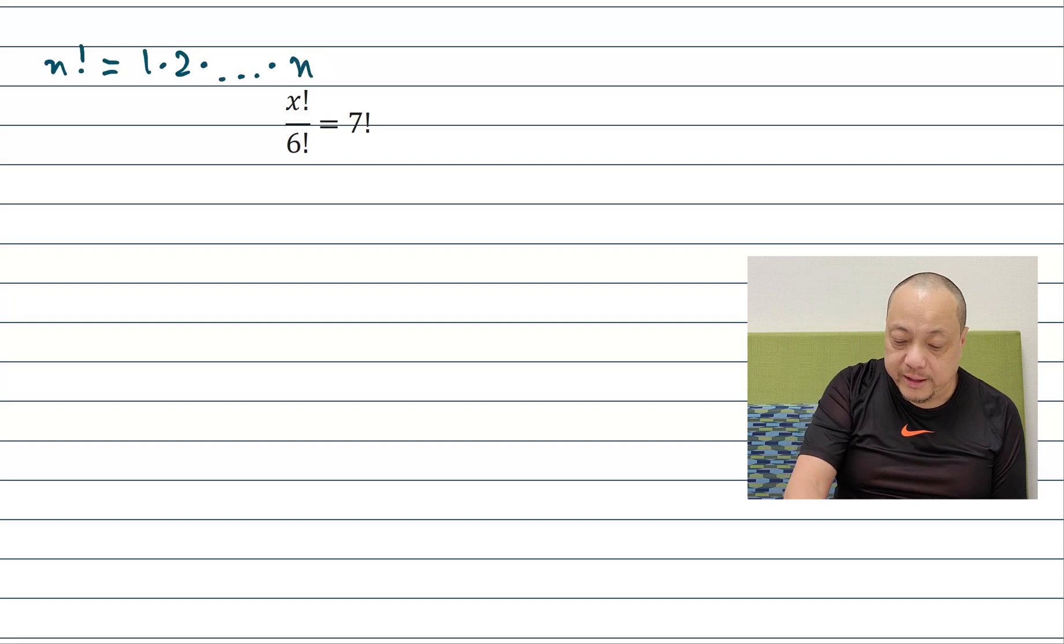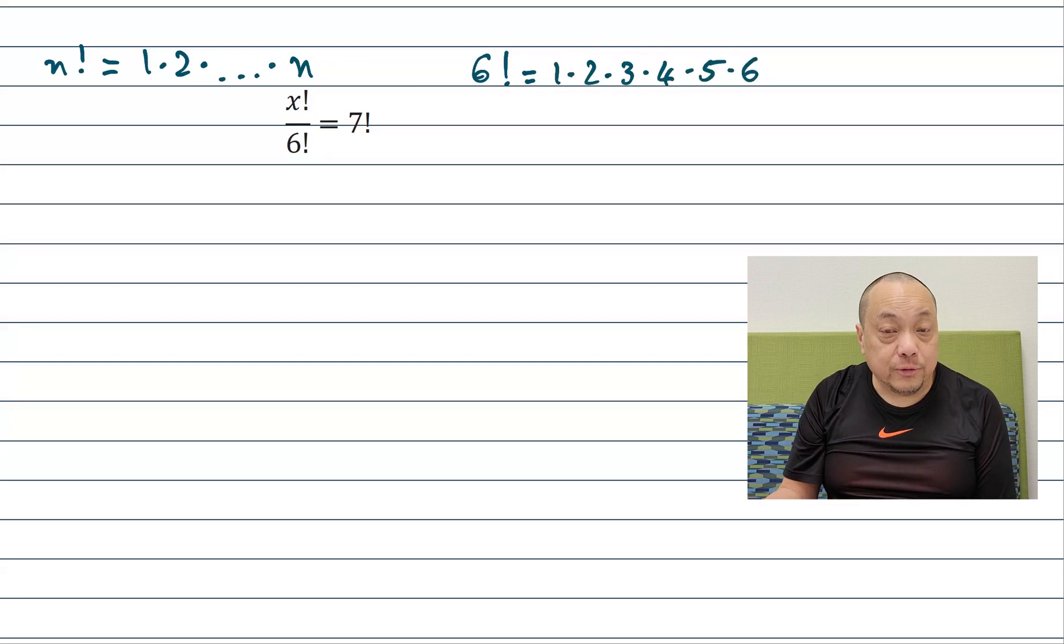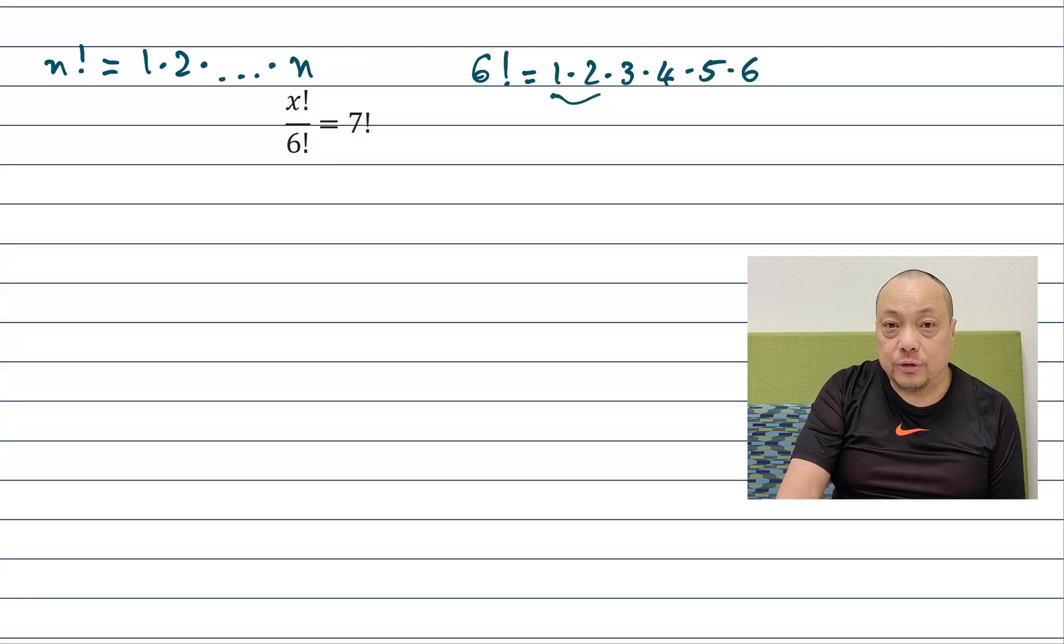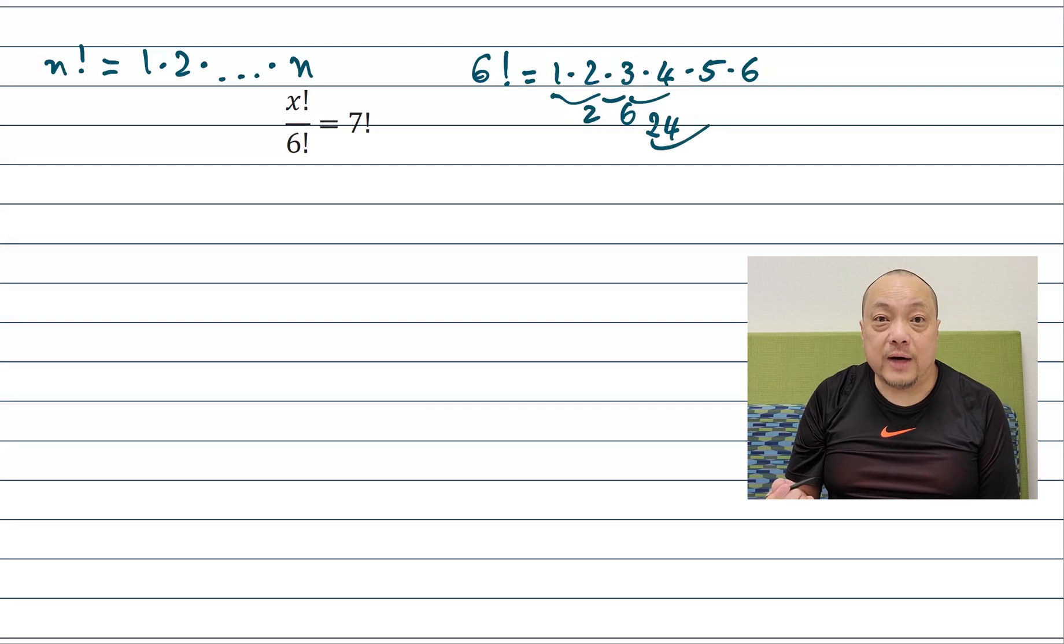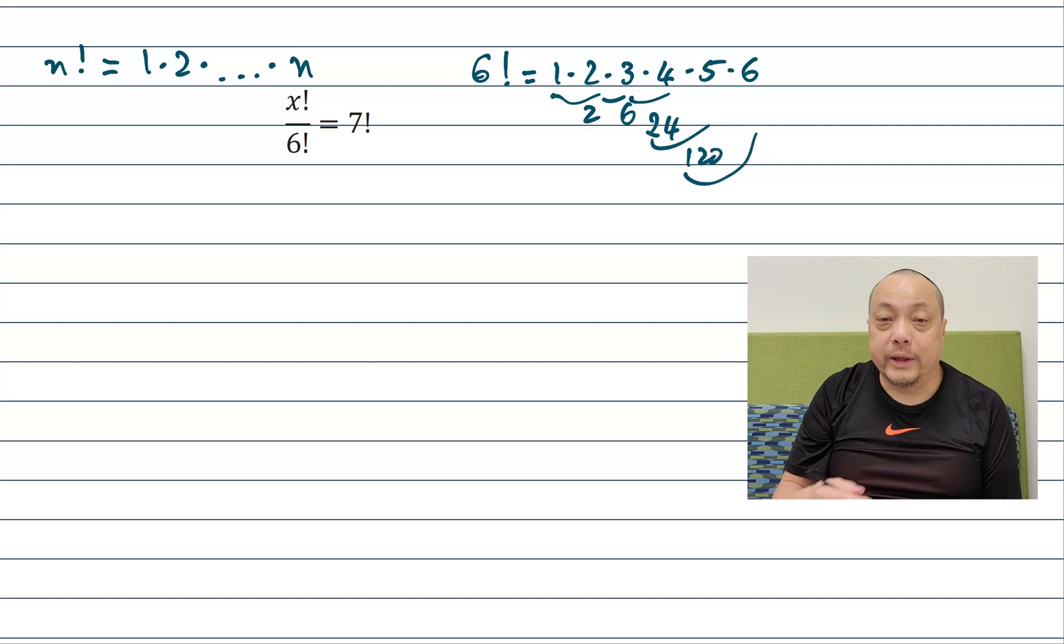So for example if I take the 6 factorial down there, then I have 6 factorial is 1, 2, 3, 4, 5, 6 all multiplied together. 1 times 2 is 2, times 3 is 6, 6 times 4 is 24, 24 times 5 is 120, and then 120 times 6 is 720.